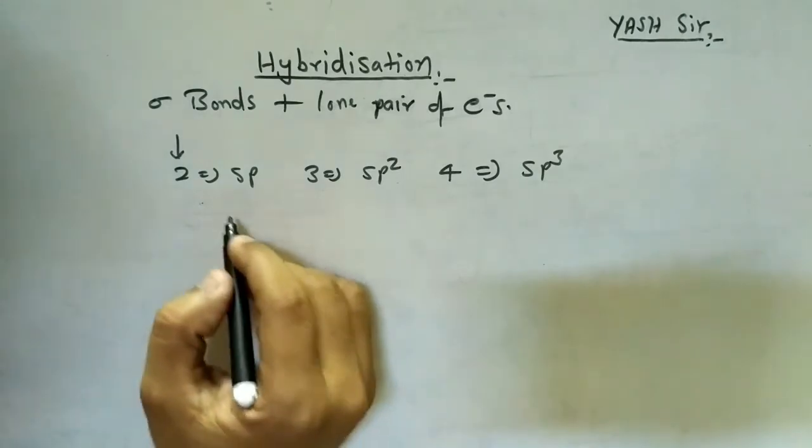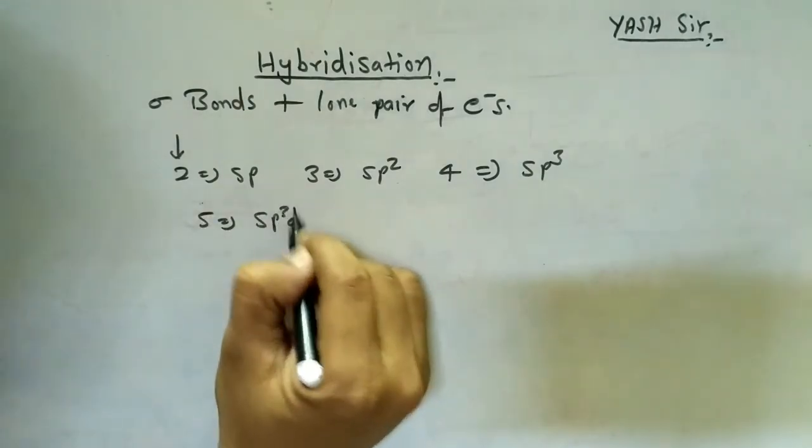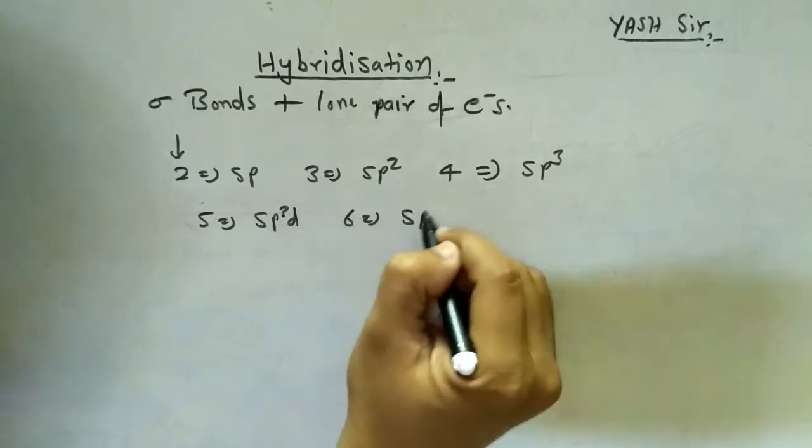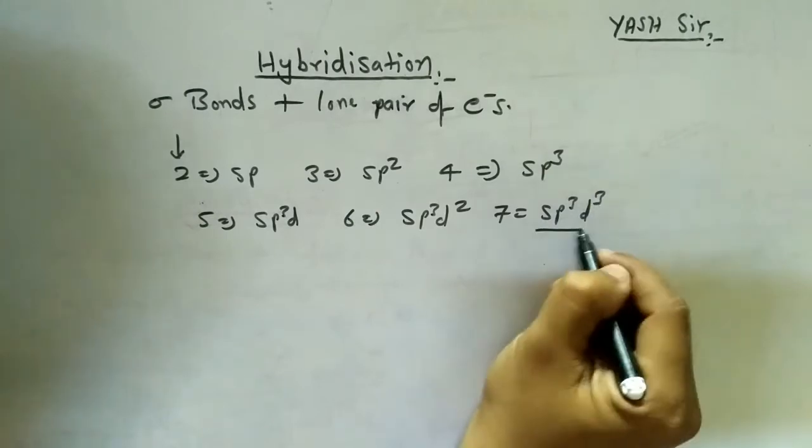If total number is 5, the hybridization will be sp3d. If it is 6, sp3d2. And if it is 7, sp3d3.